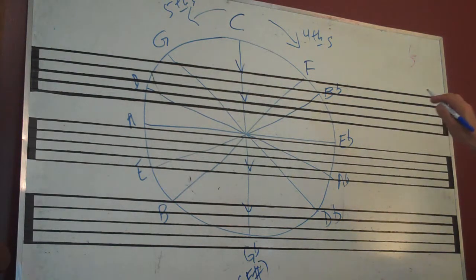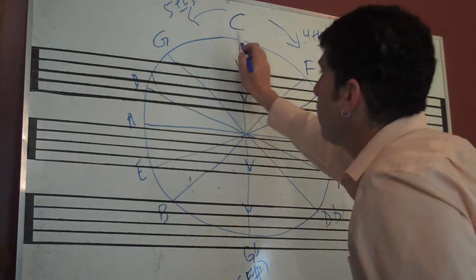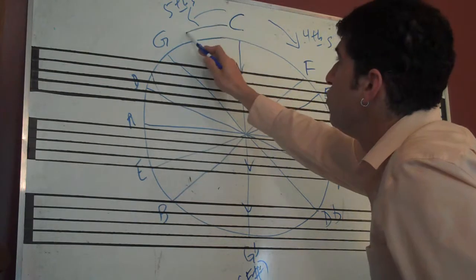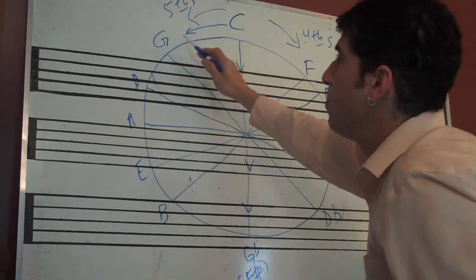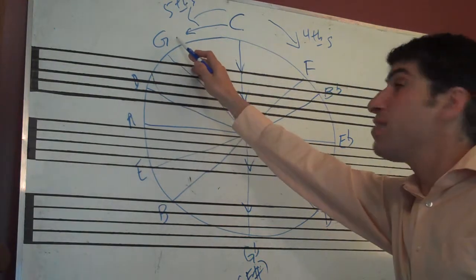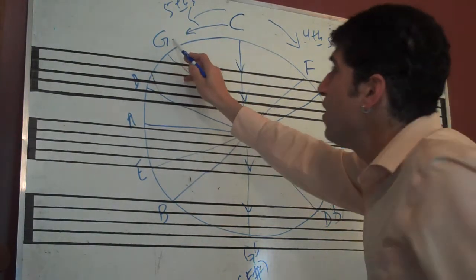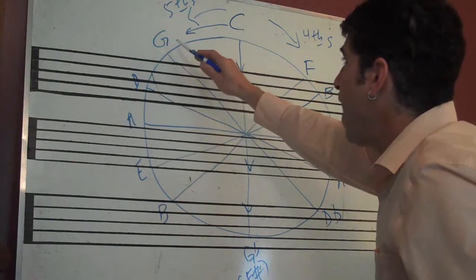If you think about it, look at this. C to G is a fifth. But if you flatten this G by a half step, it becomes G-flat.